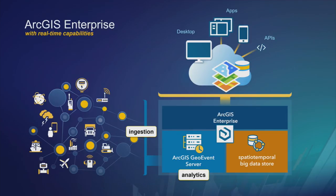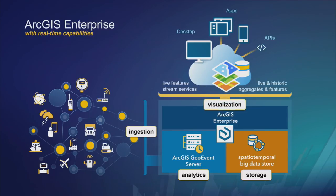The second is analytics, which is the bulk of what we'll be talking about today. Analytics means inquiring and interrogating that data as it comes in, in real-time — examining it and looking for key bits of information just as fast as it arrives. The third component is sending out new streams of data to other destinations, whether to a storage medium like a data store, a spatial temporal big data store, or a feature service.